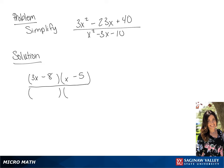Now we're going to factor the denominator, and we will get x minus 5 times x plus 2. Since x minus 5 over x minus 5 is 1, we can cross those off. And we get a final answer of 3x minus 8 over x plus 2.